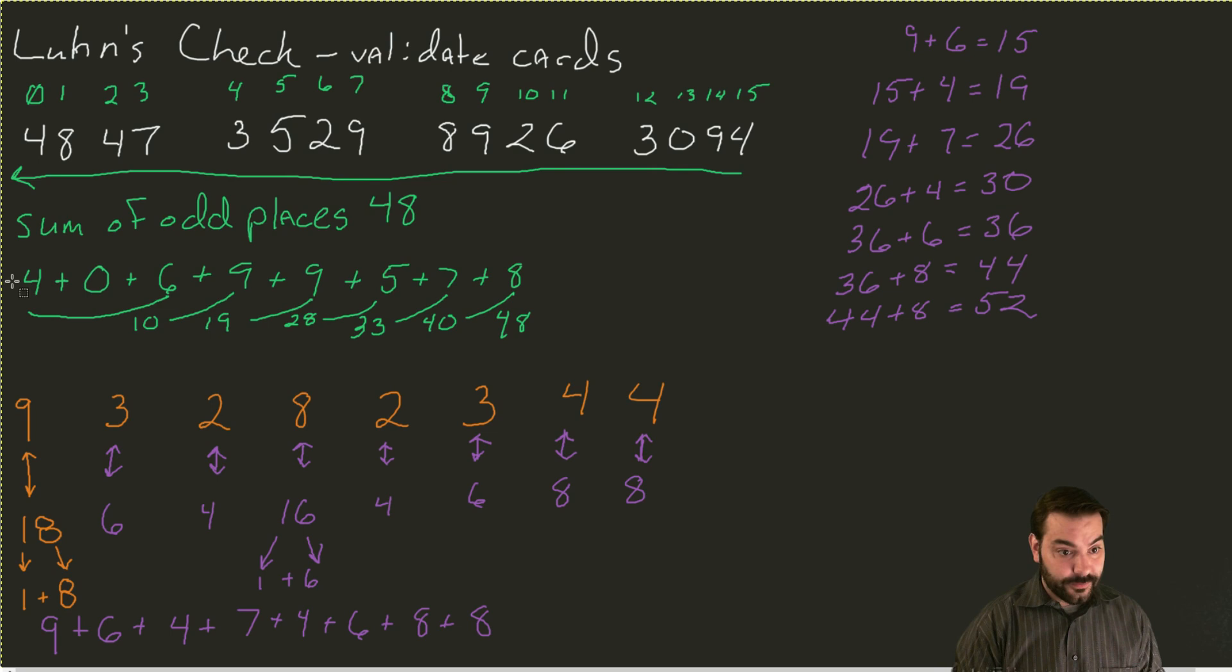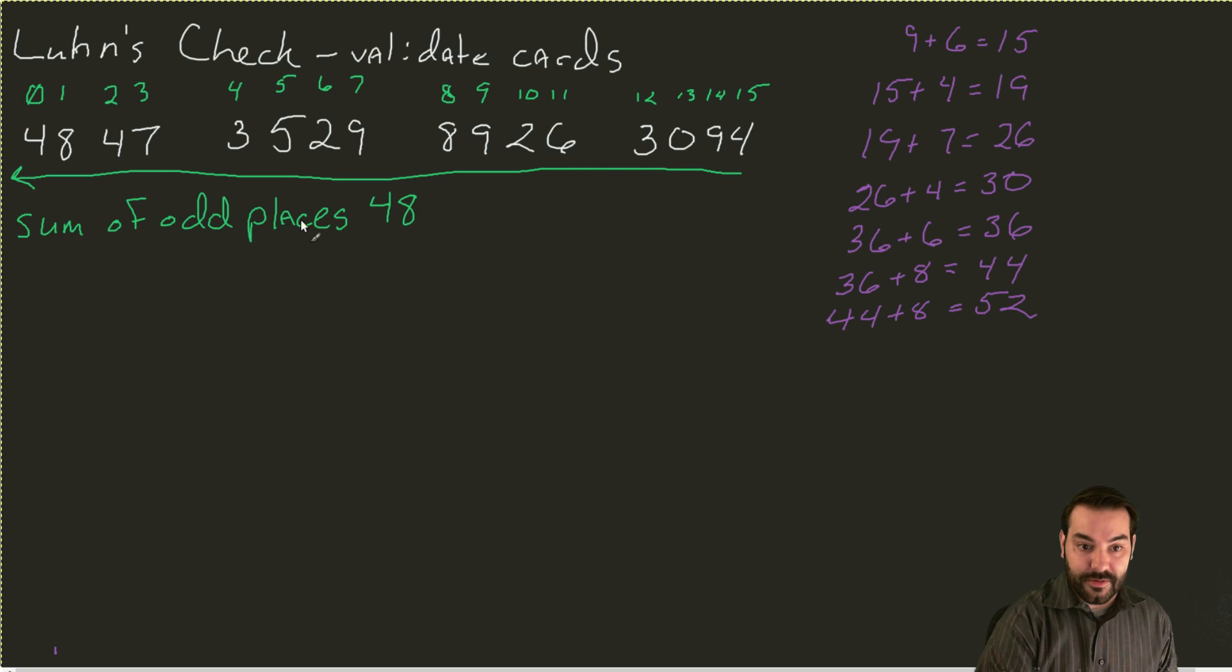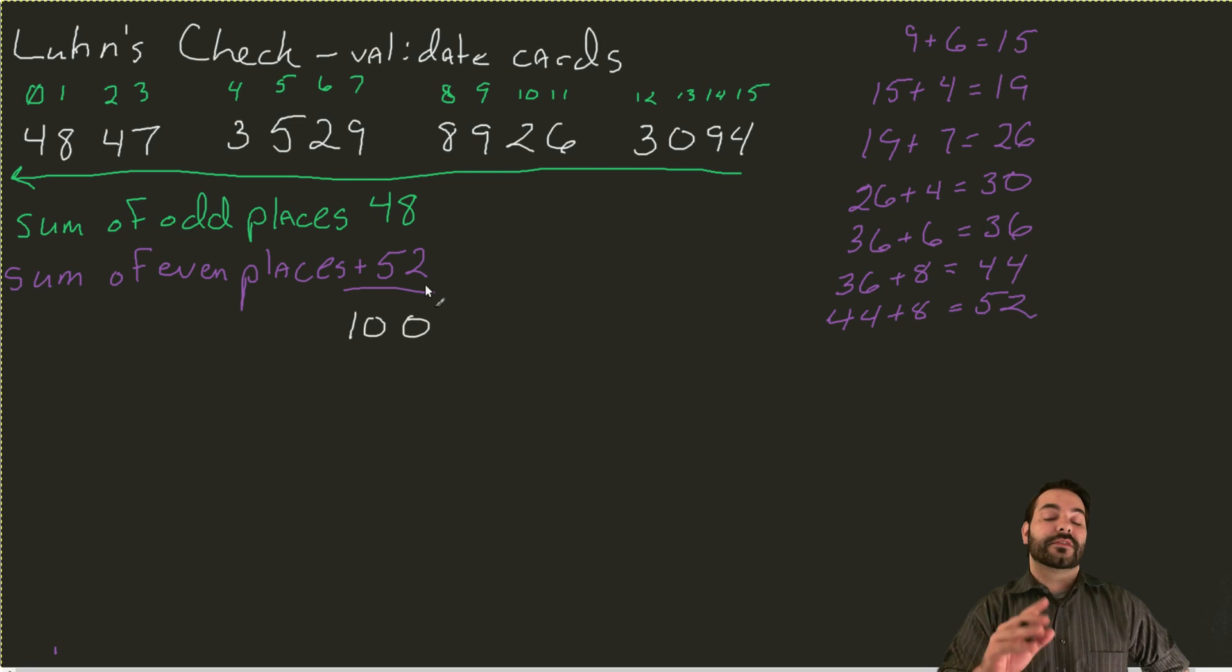So why does any of this matter? Now that I've taken all this math, I've got the sum of odd places 48 and the sum of even places 52. If I take these two numbers and I add them together, I get 100. Now, the Luhn check basically says that if, when I run these two sums, if I sum the odds and I sum the evens using the double approach, if the number that I get is divisible by 10, I have a valid card.